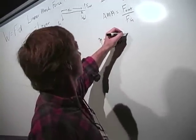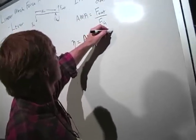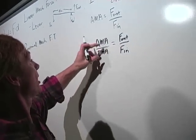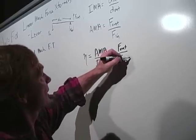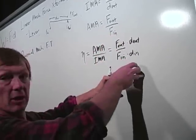Let's put in these numbers. The AMA is F out over F in. The IMA on the bottom is D in over D out. So D in would be on the bottom. D out would be on the top. Since it's D in over D out on the bottom, it flips.